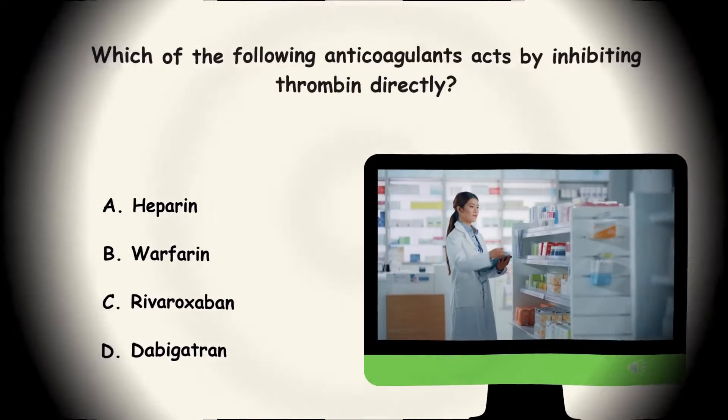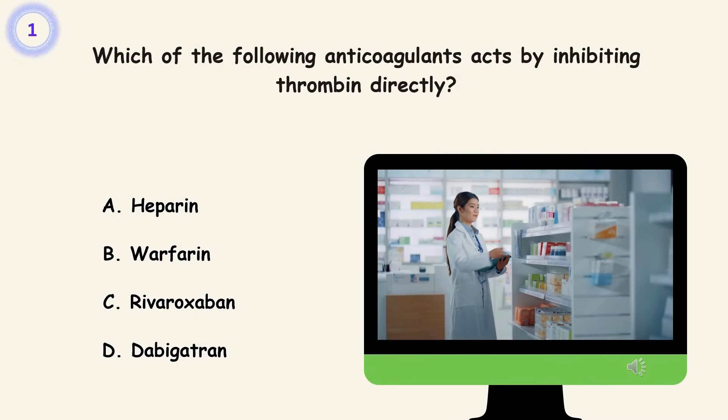Question 1. Which of the following anticoagulants acts by inhibiting thrombin directly? A. Heparin. B. Warfarin. C. Rivaroxaban. D. Dabigatran. Answer is D. Dabigatran.